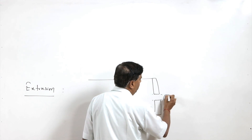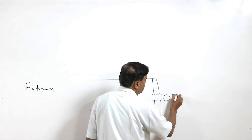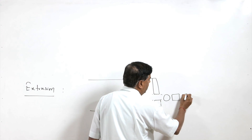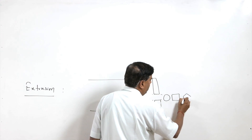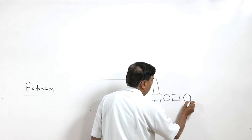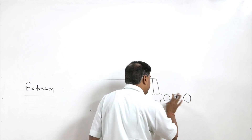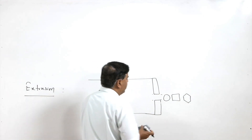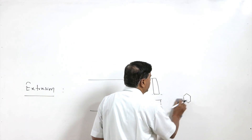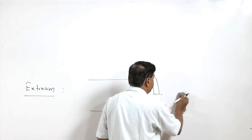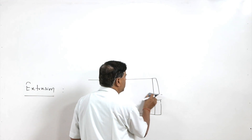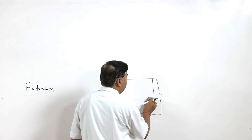The opening can be circular, square, hexagonal, or anything we want. This opening decides the shape of the product which will be made.